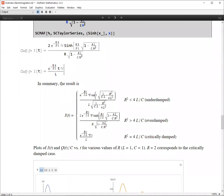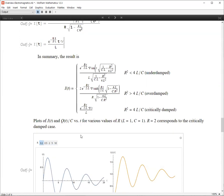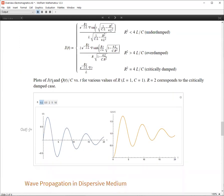So in summary, the result is for these three different cases. We have a sine or hyperbolic sine or linearly increasing function. And the plots of i(t) and q(t) over C, this is the potential that is applied to the capacitance.